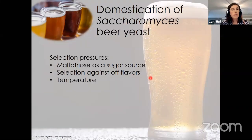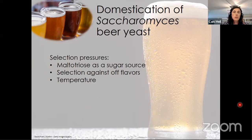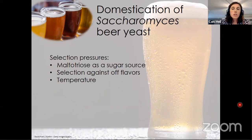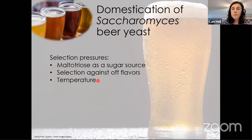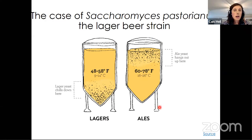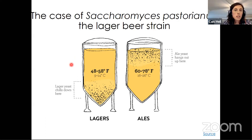Today we're going to talk about two environments that Saccharomyces cerevisiae has adapted to: beer and bread. Much like the selection and breeding for traits like smushed face and short stature of a pug, humans have been selecting for certain traits of yeast in human-made environments like beer. Some of the conditions selected for in beer include the ability to break down complex sugars like maltotriose found in malt, selection against off flavors like clove, and in certain cases, selection on cold temperature. Lager is typically fermented at quite cold temperatures — a range of 9 to 14 degrees Celsius — much below the preferred temperature of S. cerevisiae of 30 degrees Celsius.